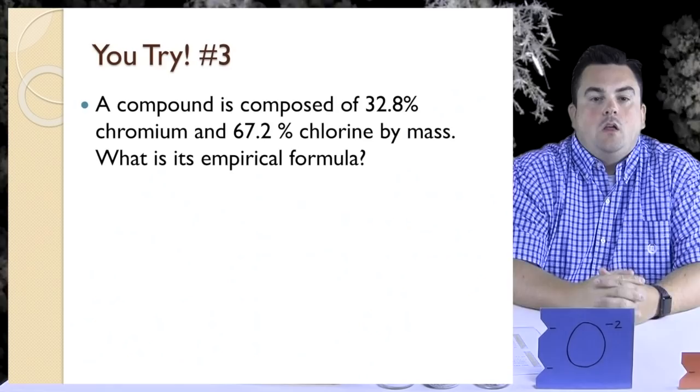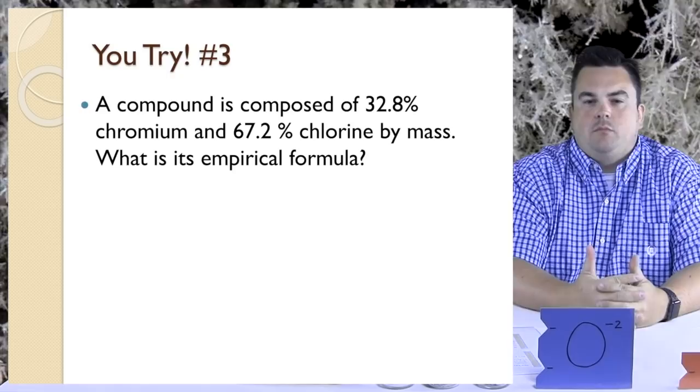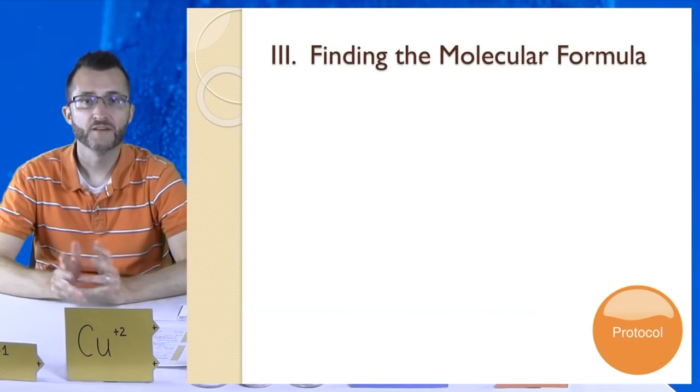You try number 3. A compound is composed of 32.8% chromium and 67.2% chlorine by mass. What is its empirical formula? Remember to follow all the steps. Show all your work. And when you get your mole ratios, you can round to a whole number if it's very close. Only keep decimals if it's a noticeable fraction.